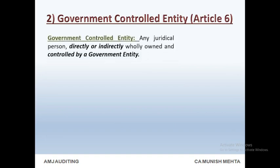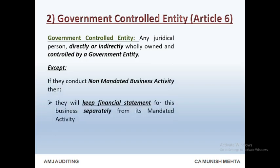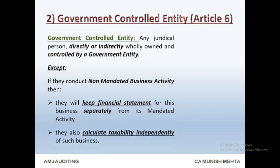Government Controlled Entity — Article 6. A government controlled entity means any juridical person directly or indirectly wholly owned and controlled by a government entity. Except: if they conduct a non-mandated business activity, then they will keep financial statements for this business separately from its mandated activity, and they also calculate taxability independently of such business.